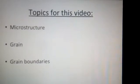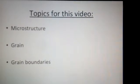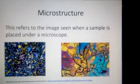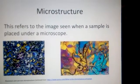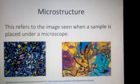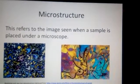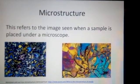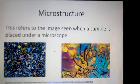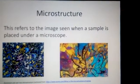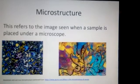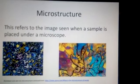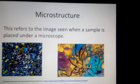The main topics for these videos I'll talk about are microstructure, grains, and grain boundaries. Now microstructure, if you had a sample of aluminum and you place that under a microscope, this is the image you'd see, the one on the left. And the one on the right is the microstructure of cast iron. So microstructure is basically what you see when you place a sample under a microscope.